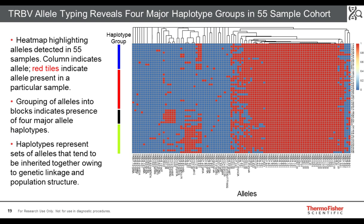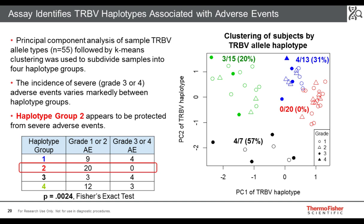In the next slide I project this data into two dimensions using principal component analysis, then overlay that projection with the adverse events annotation of the cohort. Each symbol represents a different individual and each color a different haplotype group; the symbol shape indicates the grade of adverse events from grades one to four. Notably, the red haplotype group makes up about 30% of this Caucasian cohort, and no one in that group had a grade three or higher adverse event — they appear to be protected from severe adverse events.